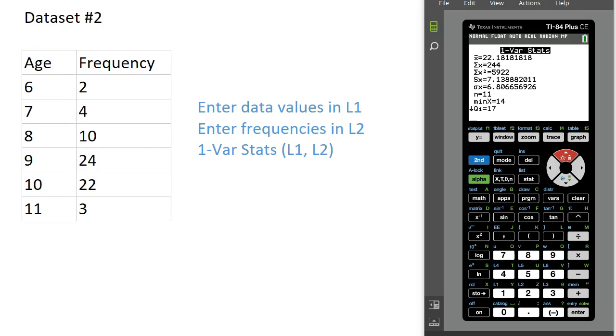Just looking at this table, it looks like there were two six-year-olds at this camp, four seven-year-olds, ten eight-year-olds, and so on. Our goal is to find the mean age, the median age, and the mode age.